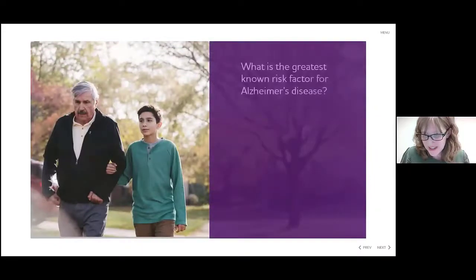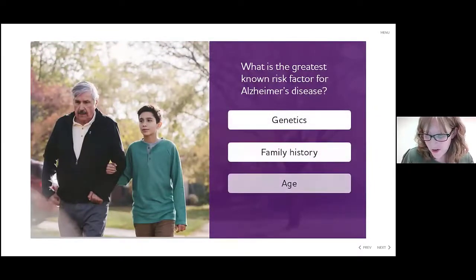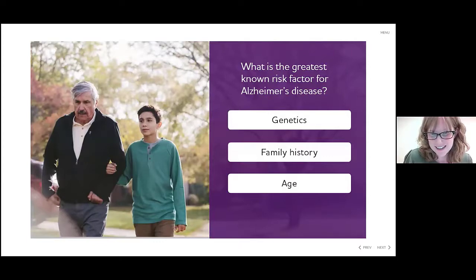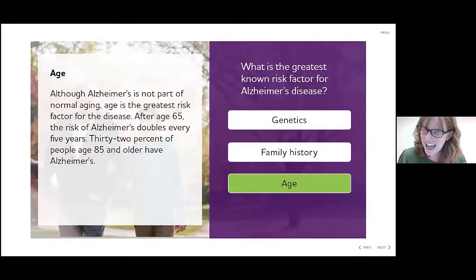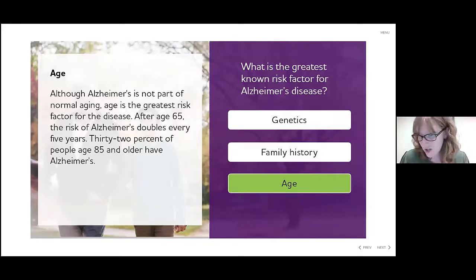Which of these options do you think is the greatest risk factor for Alzheimer's disease: genetics, family history, or age? The answer is age. Age is the greatest risk factor. Genetics are a risk factor, but age is actually the greatest. Genetics, family history, and age are all known risk factors; however, age is the greatest known risk factor. Let's hear from one of our experts as she explains the most common risk factors.